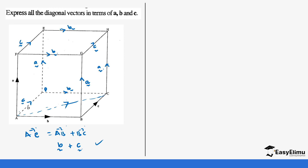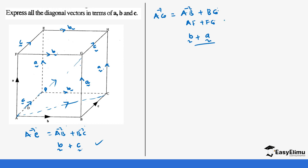If we move from A to G, AB is vector B, then AB plus BG gives us B plus A. Alternatively, we can go AF plus FG: AF is vector A and FG is vector B, which gives the same result. So diagonal AG equals A plus B, regardless of which path you take.